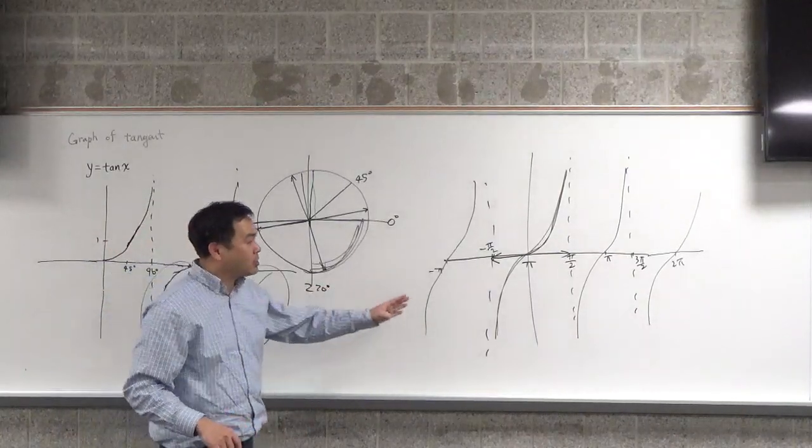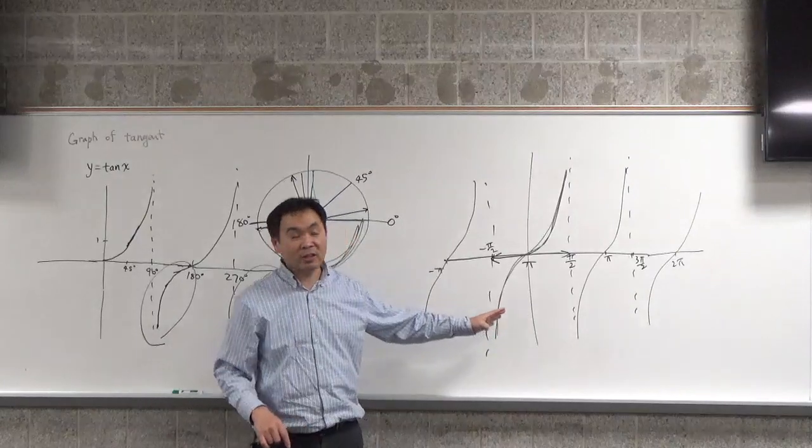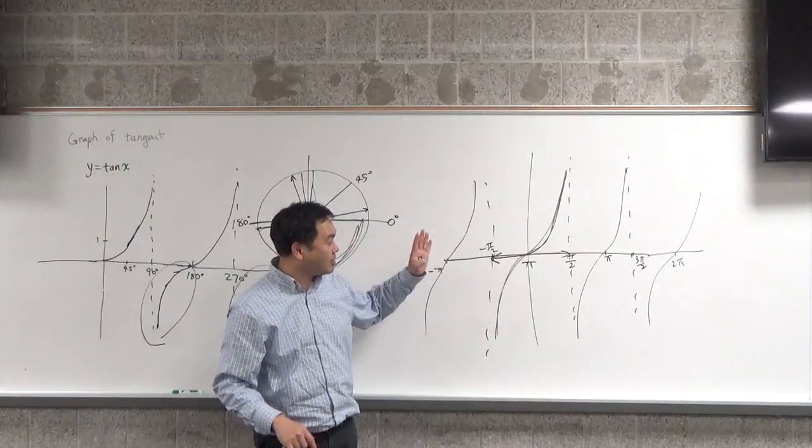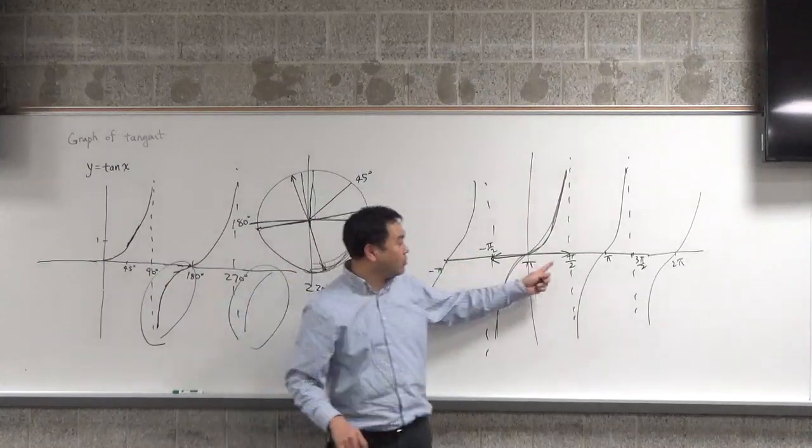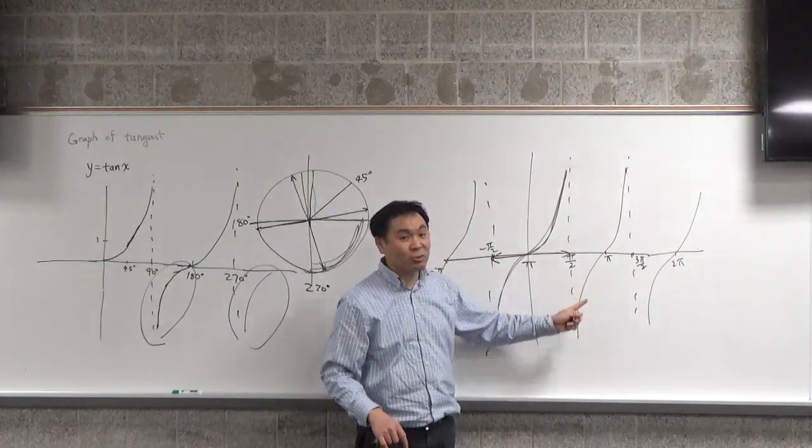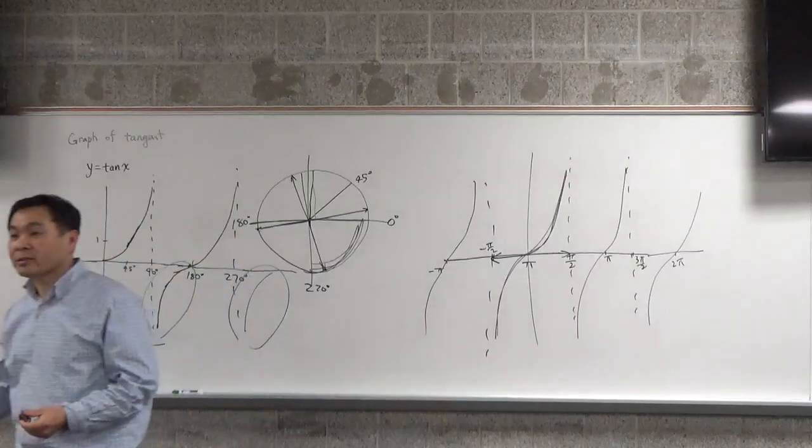And the things that you have to understand about the graph is that, first, the period is pi, and at every odd multiples of pi over 2, it has a vertical asymptote. You get that?